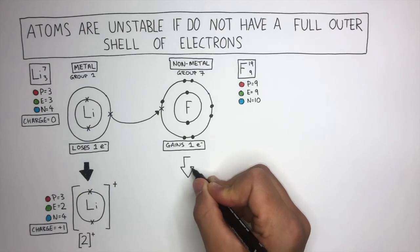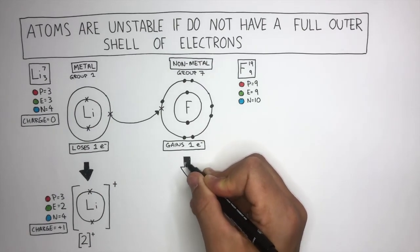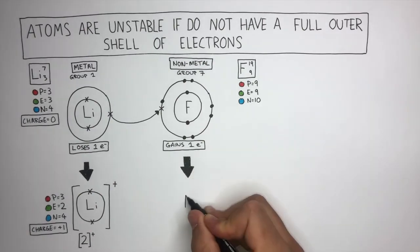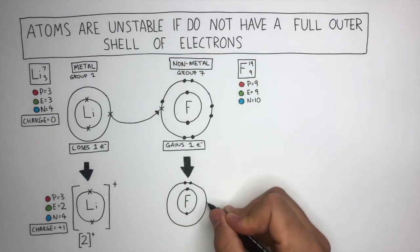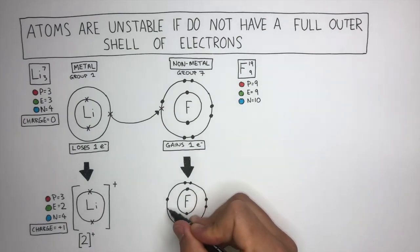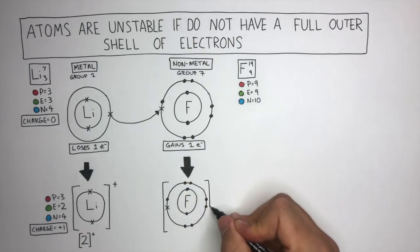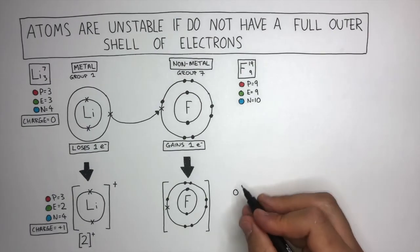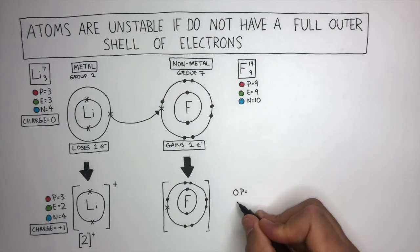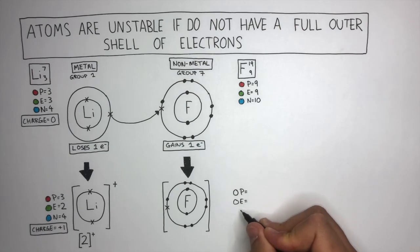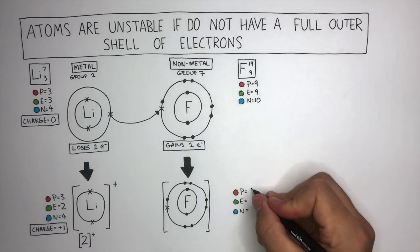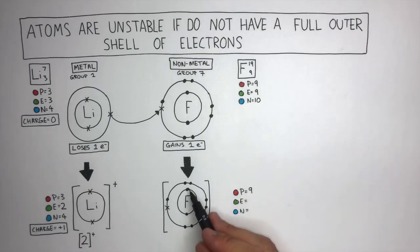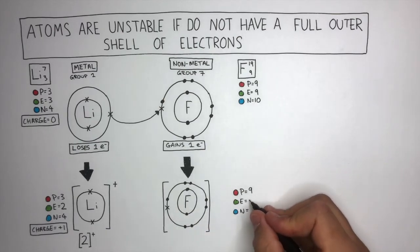Let's now take a look at how a fluorine atom gains an electron to become a fluoride ion. It's really important to always draw a dot and cross diagram whenever explaining ionic bonds, because you can see the cross having clearly been gained from the lithium atom. To understand what charge this fluoride ion has, we need to look at the subatomic particles. Nothing has happened to the number of protons, so it still has 9 protons. There are 2 electrons on the first shell and 8 electrons on the second shell, having gained 1 electron.